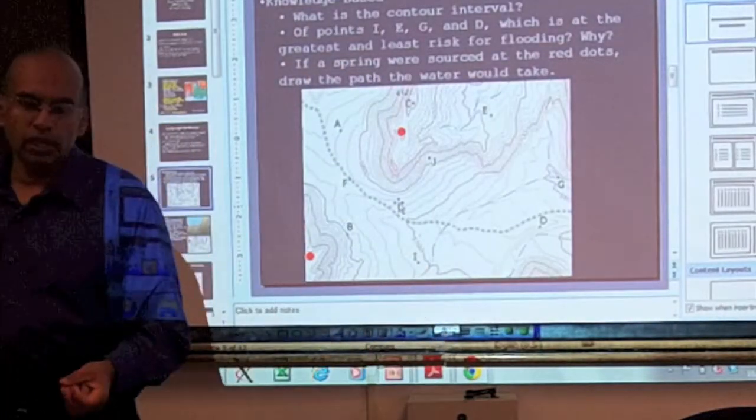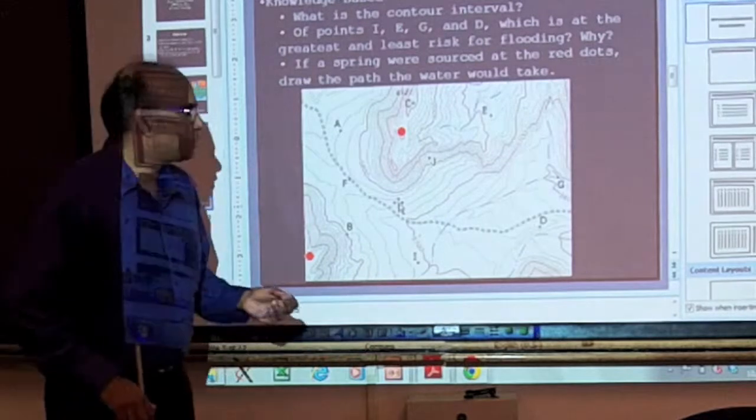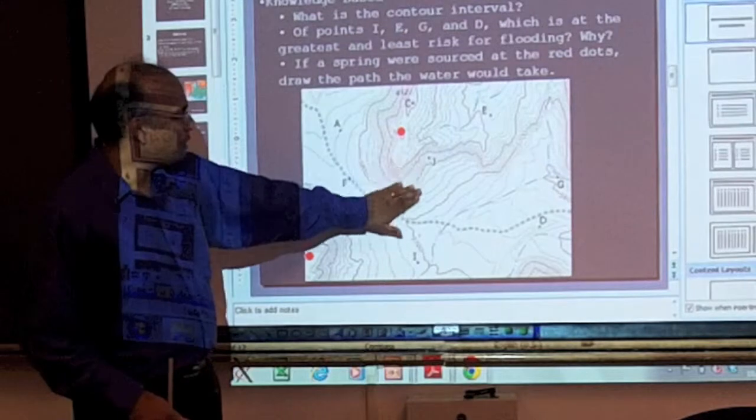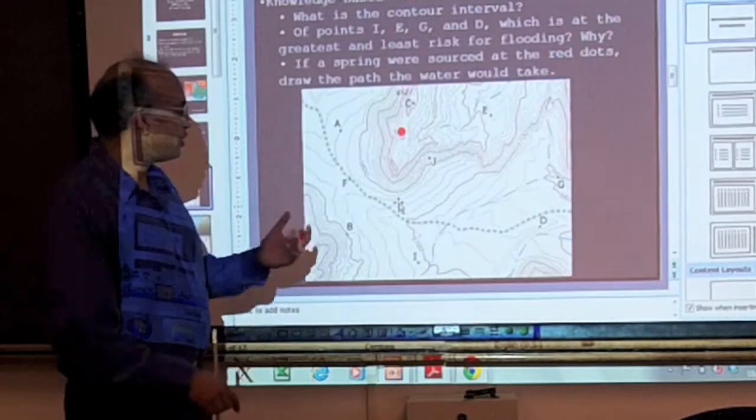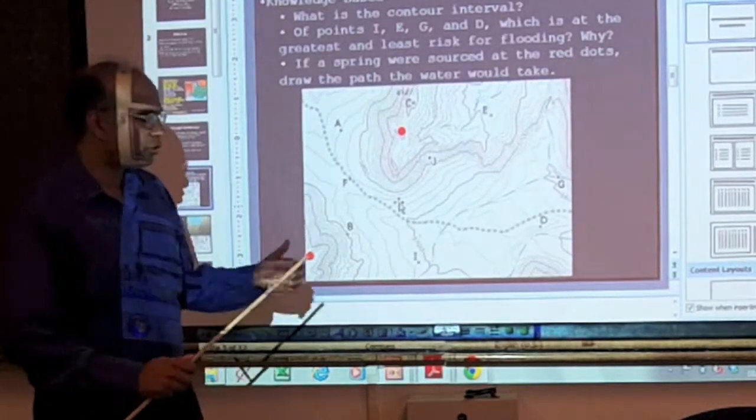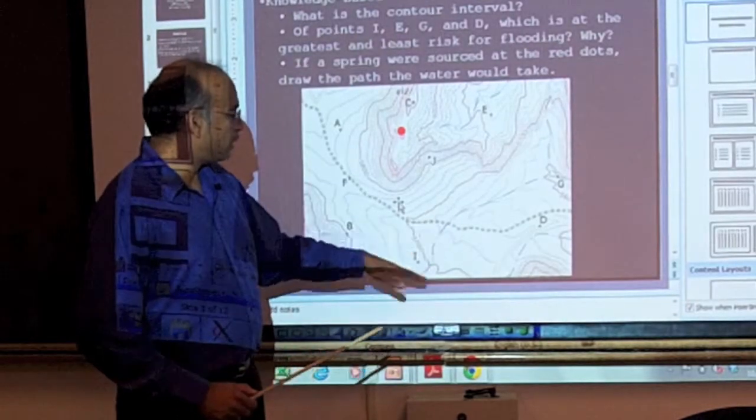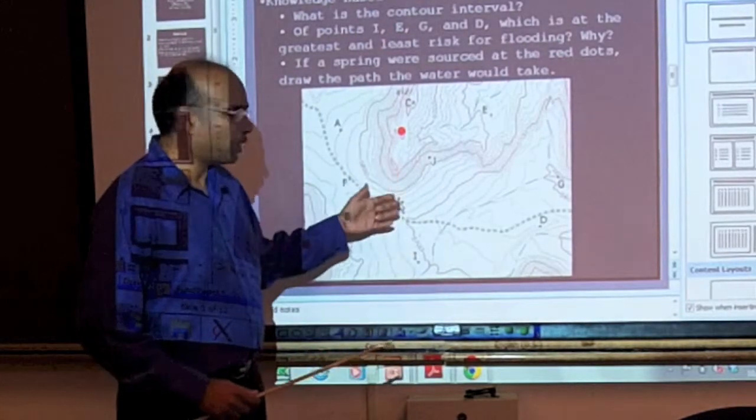Beyond the qualitative, we also want our students to have some sense of how to do this quantitatively. So how do we go from the map scale to these slopes? How do we go from map scale to actually calculating distances as well?